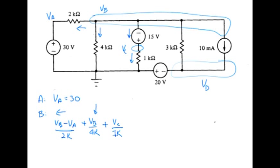And then continuing with this branch, we have VB over 3K, plus finally 10 milliamps, that equals zero.